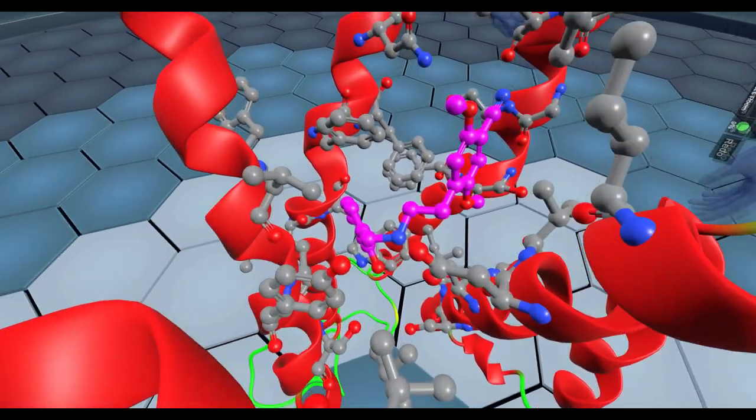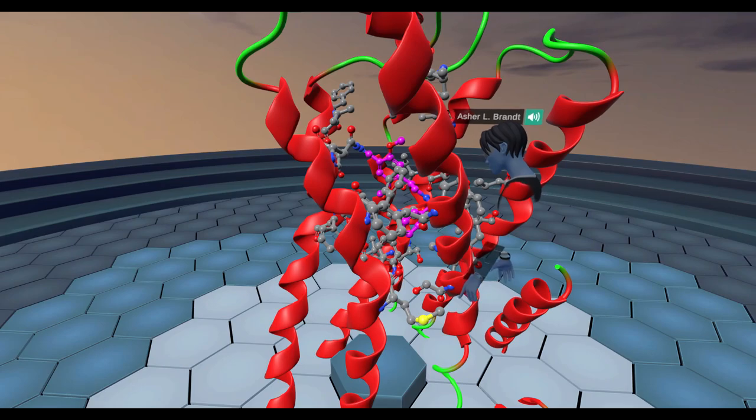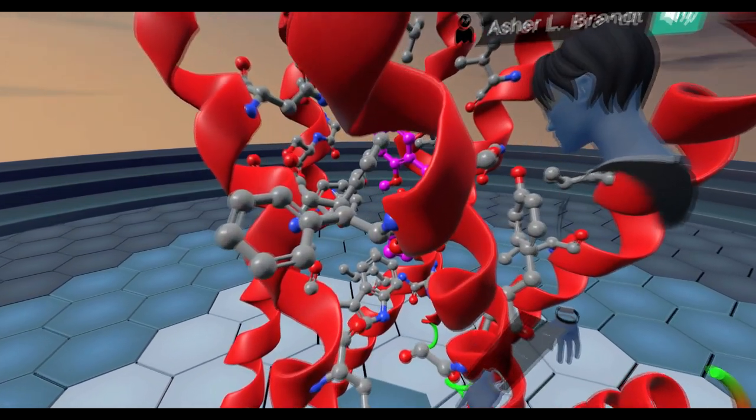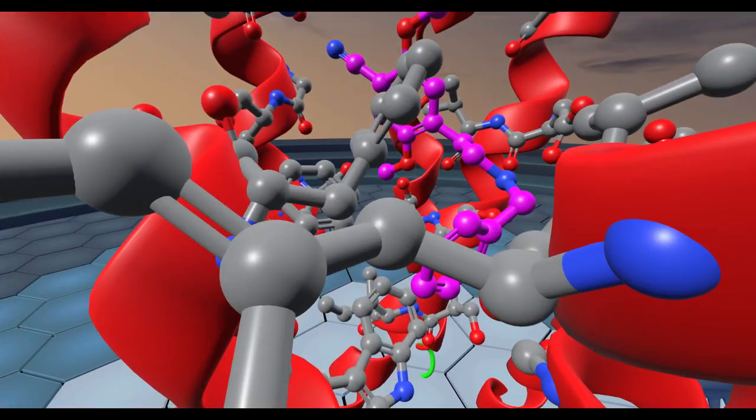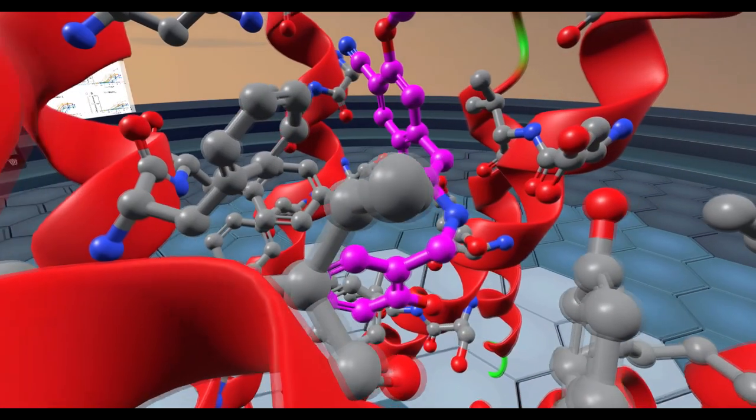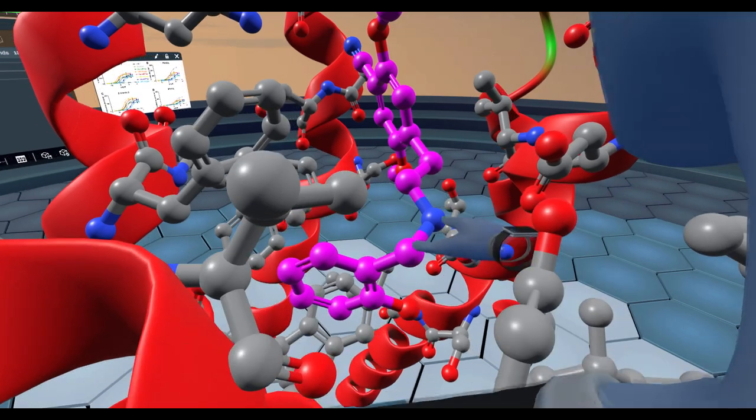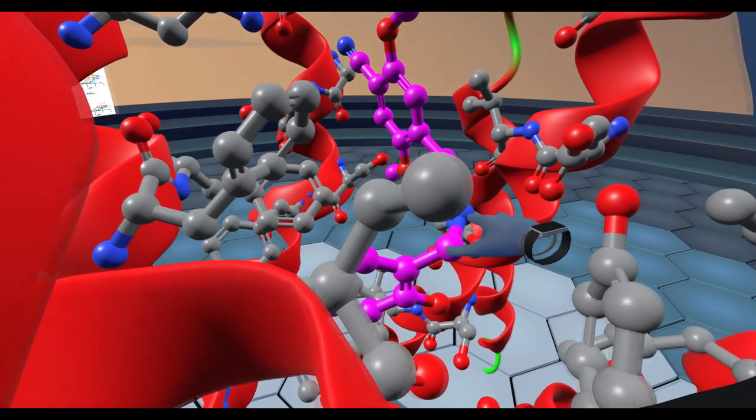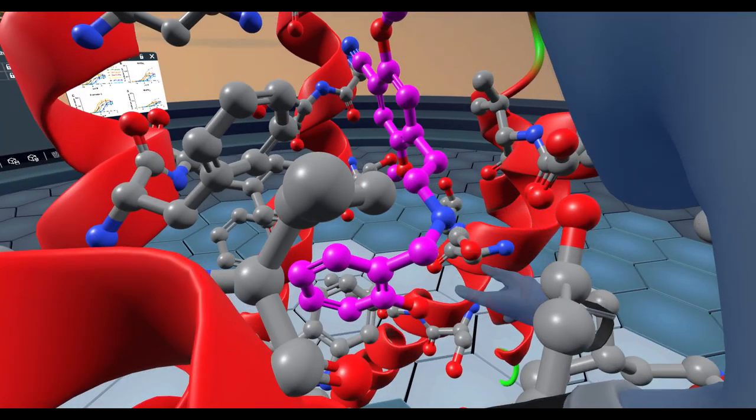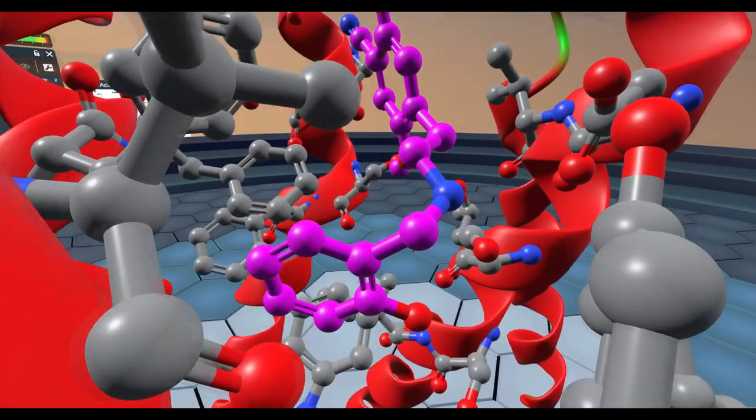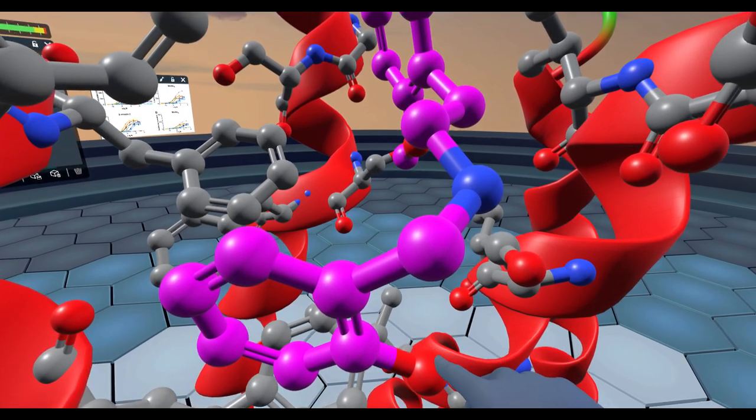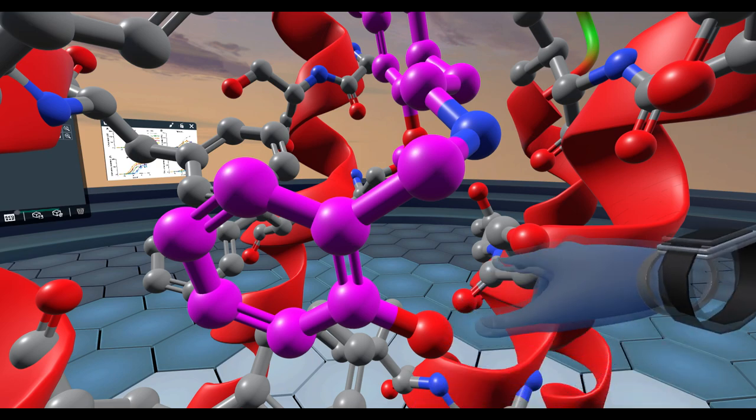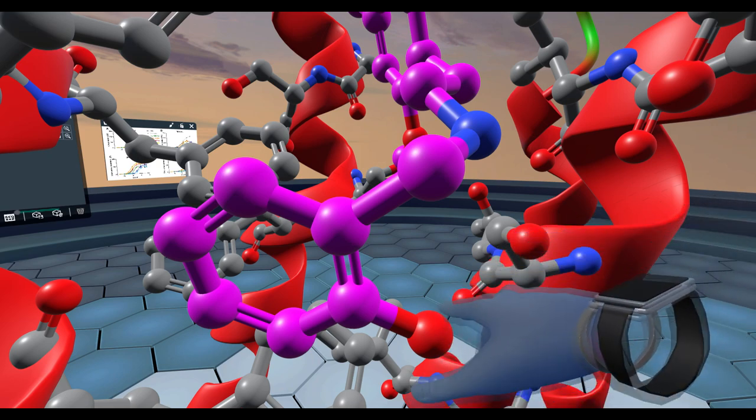Here we are inside of the binding pocket of serotonin 2A structure with 25CN-NBOH bound to it. The crystal structure paper reports that there is a salt bridge between this protonated nitrogen and aspartic acid 135, which is common amongst all psychedelics, as well as a hydrogen bond between this alcohol group and serine 159, which produces quite a strong interaction stabilizing inside of the receptor.